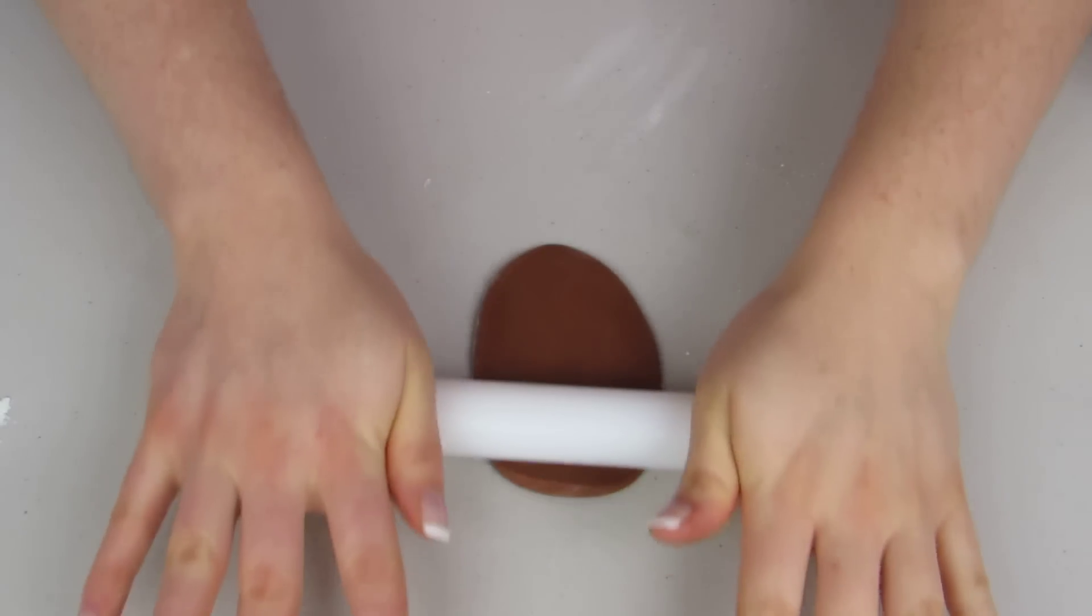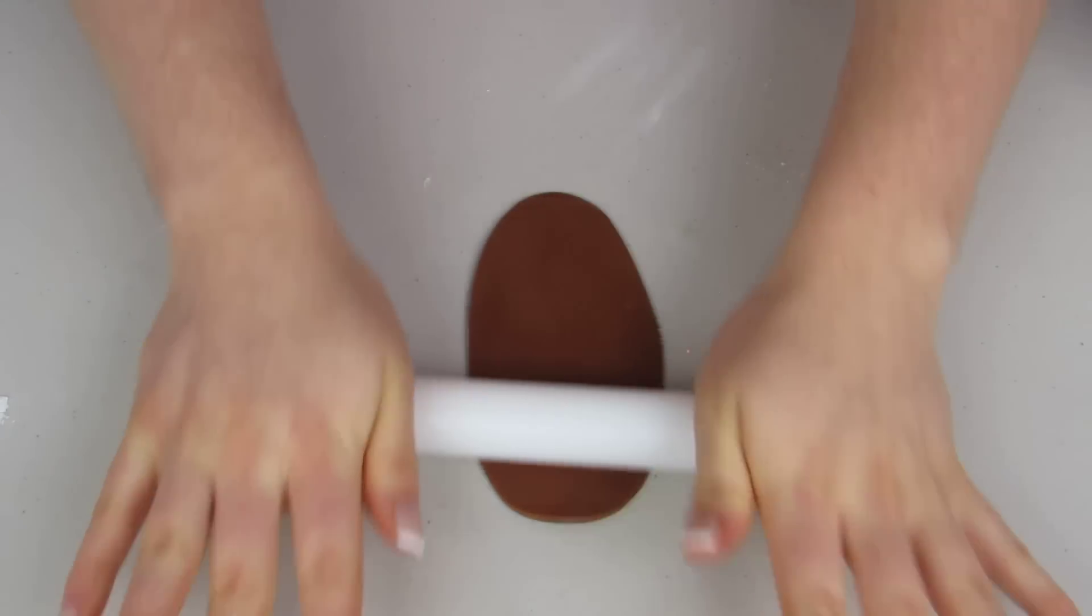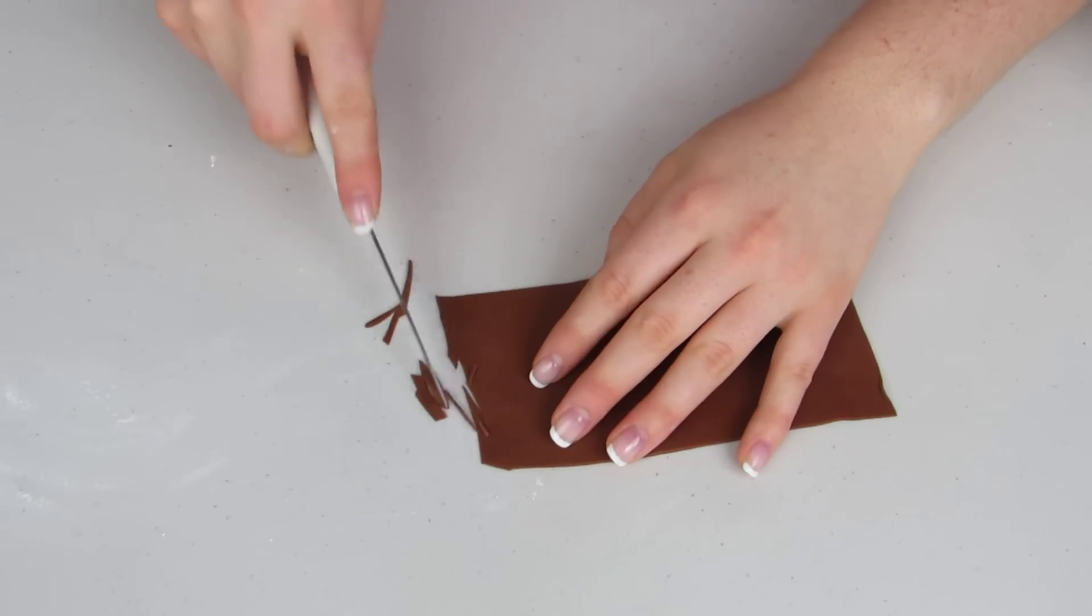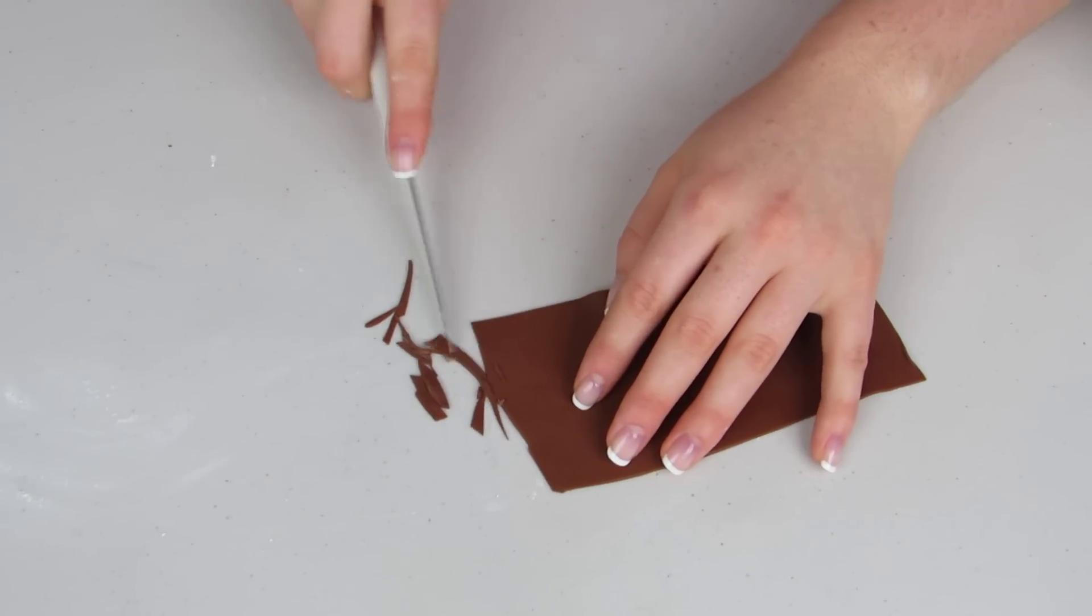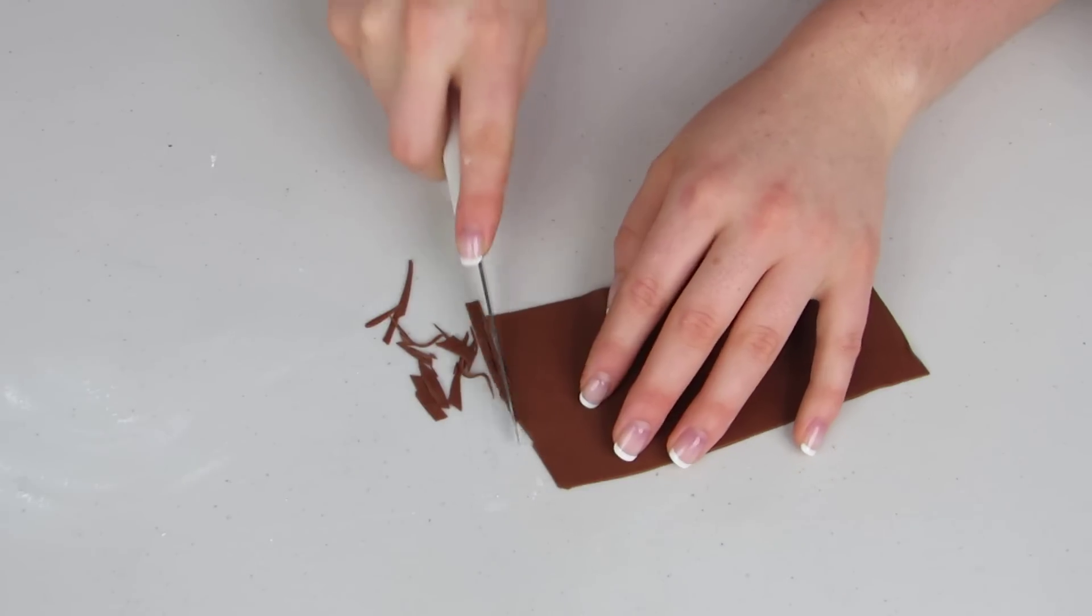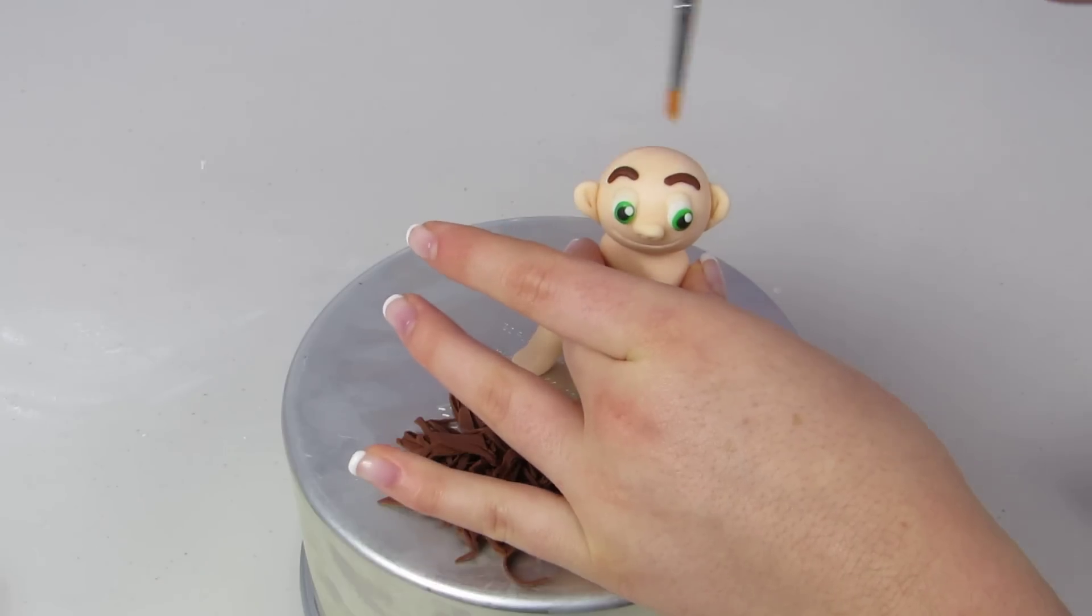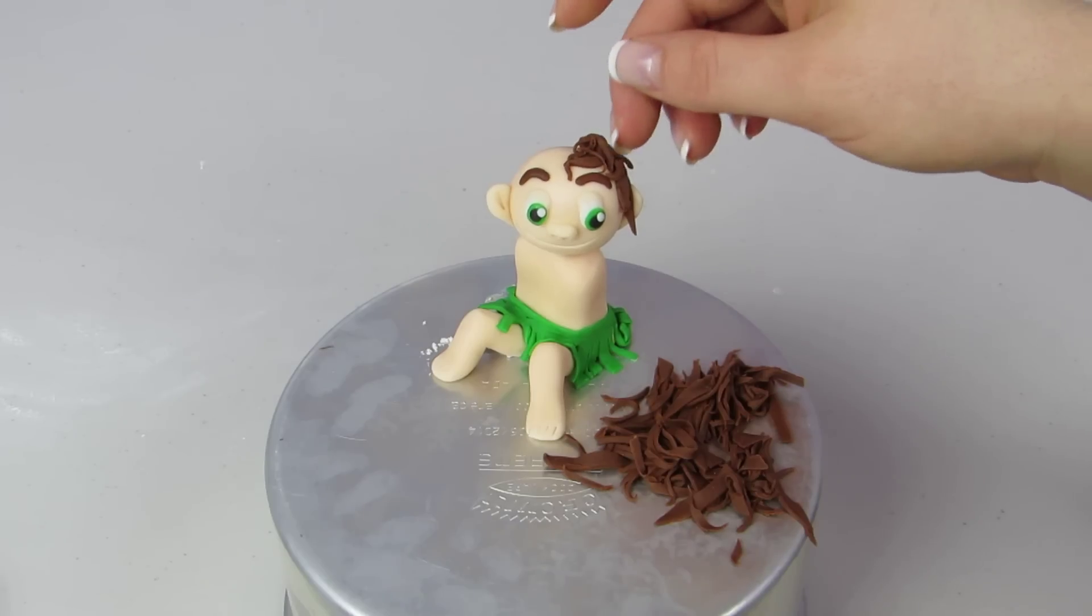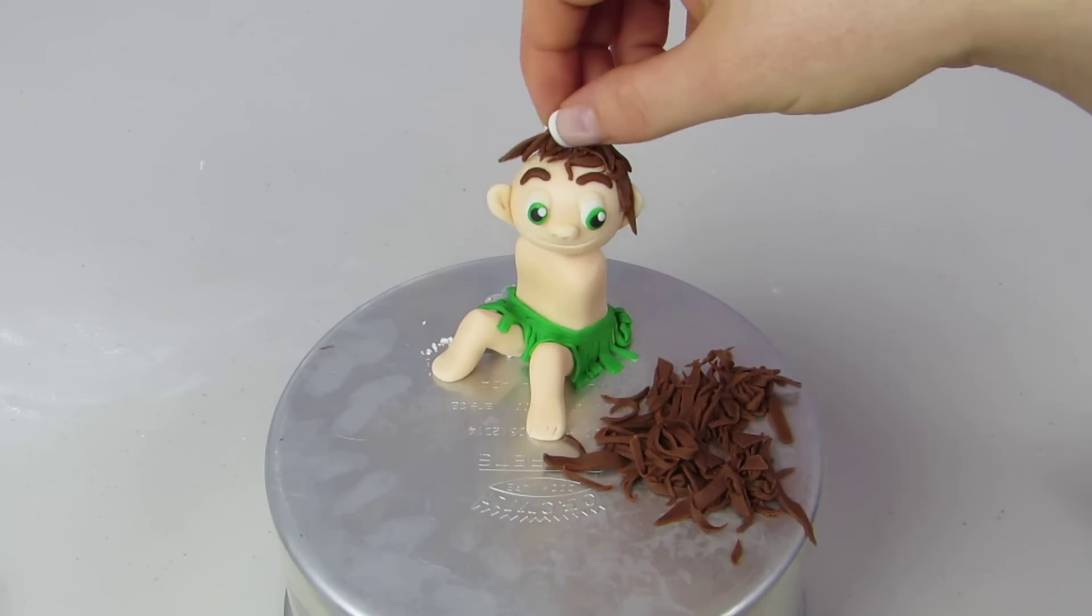Now I've rolled out my fondant relatively thin and I'm gonna start chopping it up to make his hair. So just cutting it up in these little pieces and we're gonna kind of just scrunch them together and put them on the top of his head to make him look like he has kind of bed head and this really rough looking hair. And I wet the whole top of his hair and then just clump by clump just kind of glue it on to his hair.